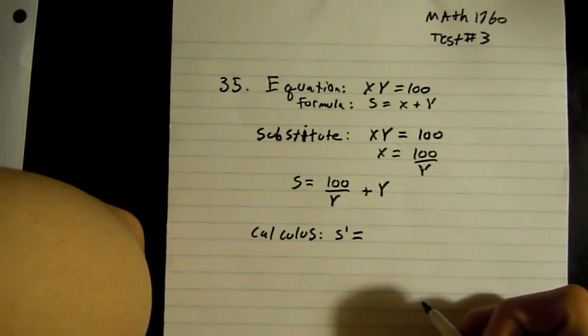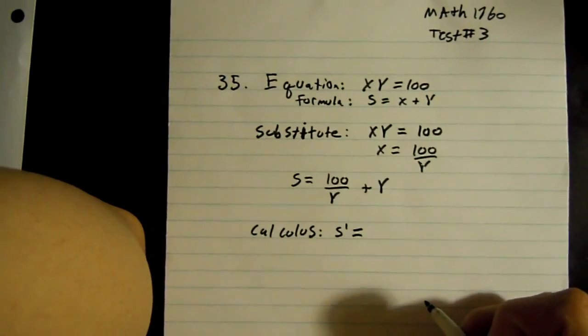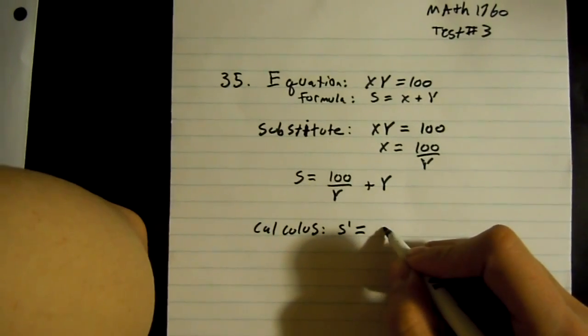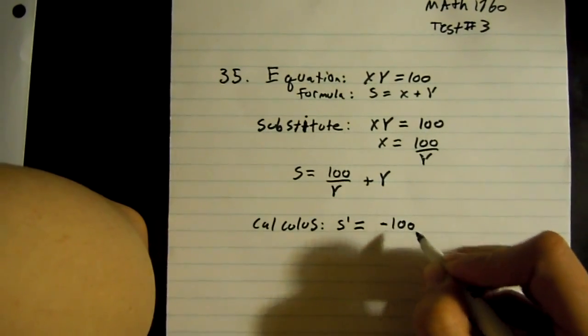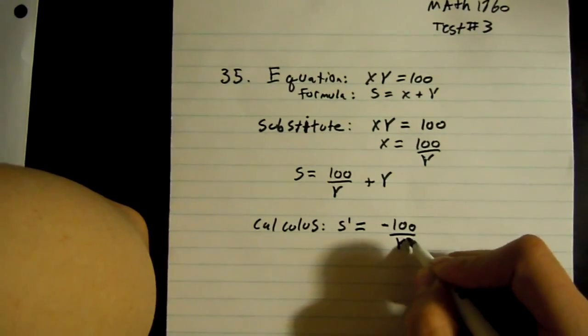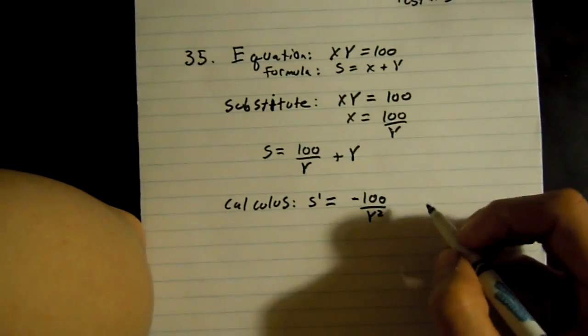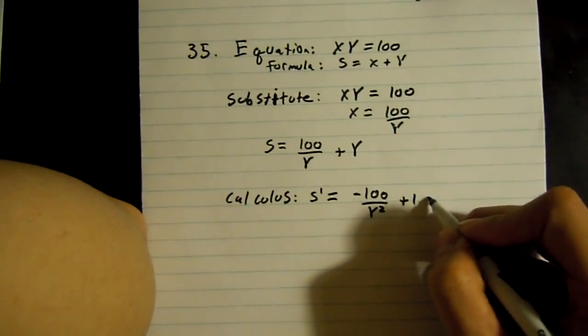So you can find the derivative and then solve for y. So the derivative is negative 100 over y squared plus 1 equals 0.